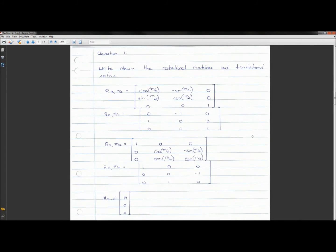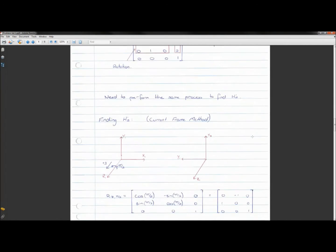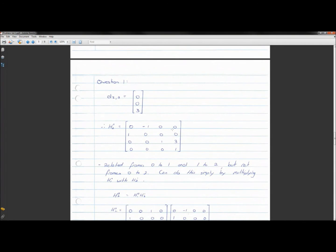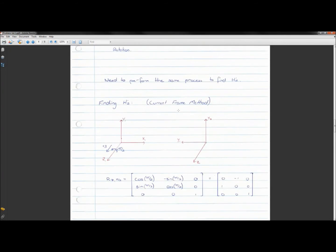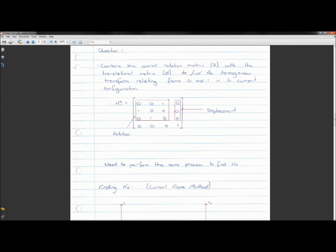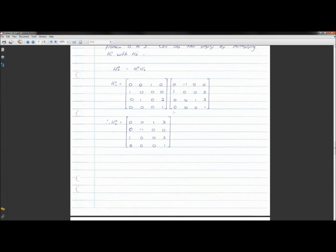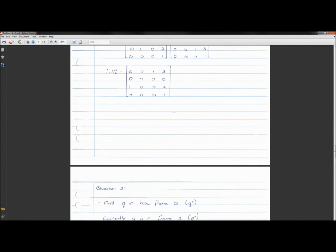So we've related those reference frames. Excellent. So we've got H0,2, and you can do the same thing to check H1,2, or H0,1. So we've found our homogeneous transforms, so we've done question 1.